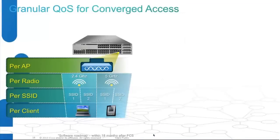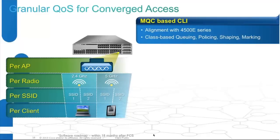QoS has changed from 3750X. We've come out with MQC-based QoS on 3850, which is in parity with ISR routers and 4500 switches in Cisco's portfolio. We still have the same quality of service for queuing, policing, shaping, and marking, but the added benefit with 3850 is that you can deploy QoS based on the access point, per radio, per SSID, or per client — all available as of today at FCS. New QoS features include hierarchical bandwidth management, approximate fair drop, and per-user/per-application level policing and marking in the software roadmap.